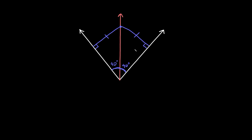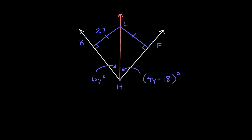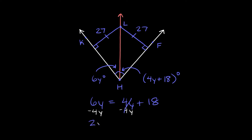Let's try a couple quick examples. Here we're going to solve for y in degrees. We know this is the angle bisector, so the distance from L to K is 27, which means the distance from L to F is also 27. We also know the two angles are congruent, so we set them equal: 6y equals 4y plus 18. Subtract 4y from both sides to get 2y equals 18, then divide both sides by 2, so y equals 9.